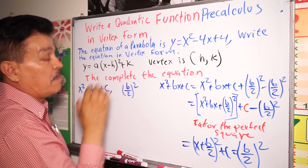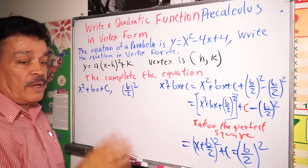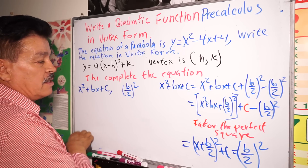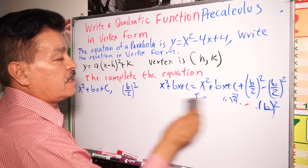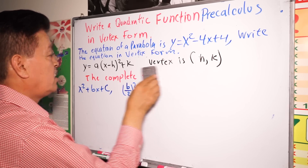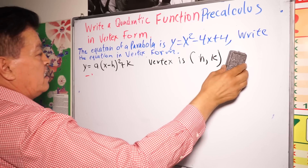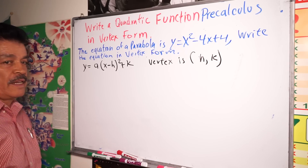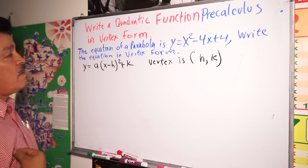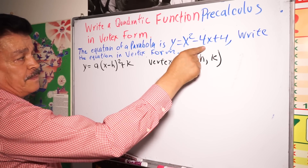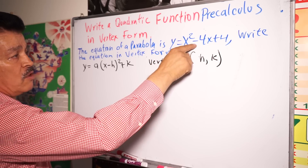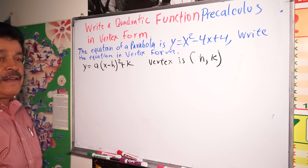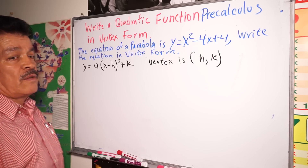Quadratic function in vertex form. Now let's erase all this concept. The problem that we have is y equals x to the second power minus 4x plus 4.